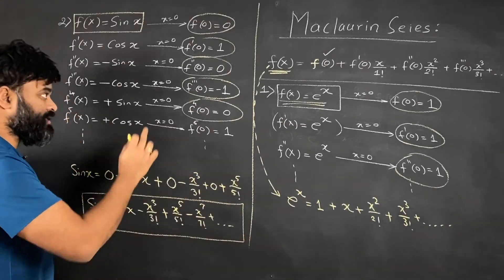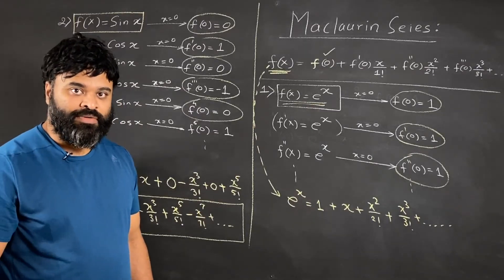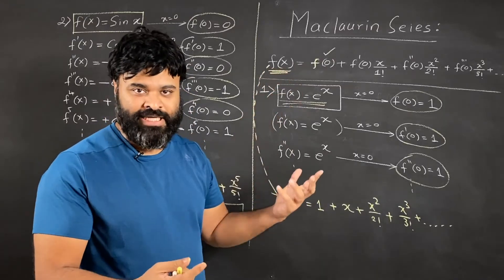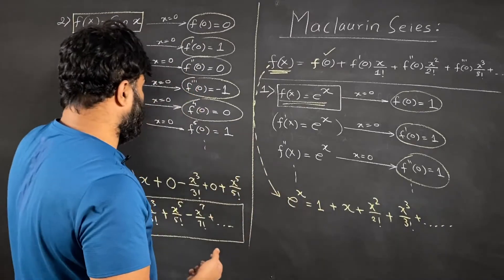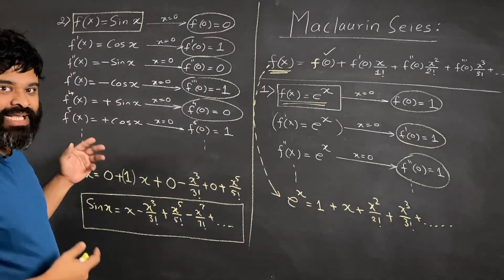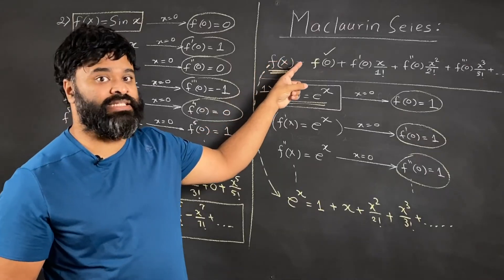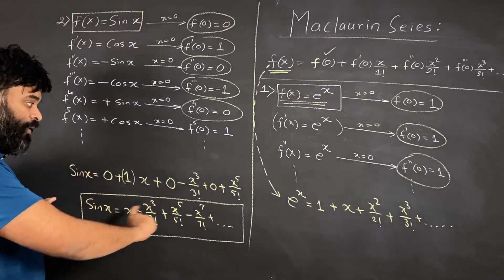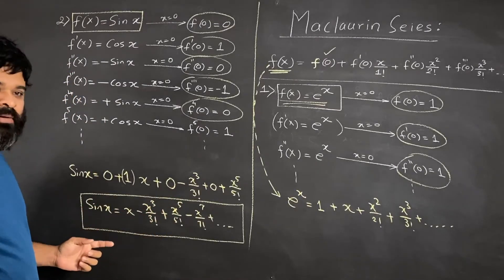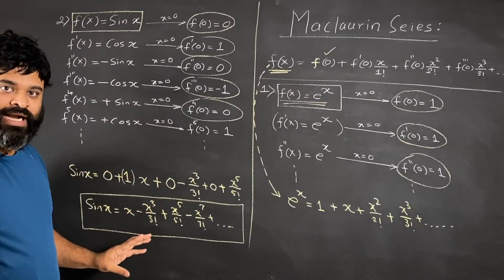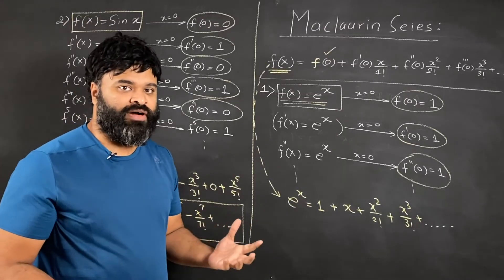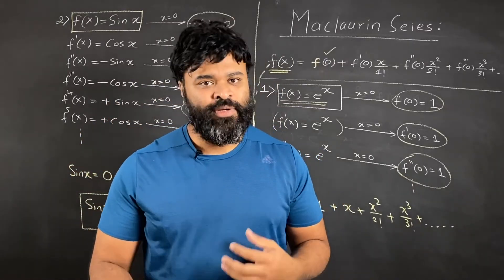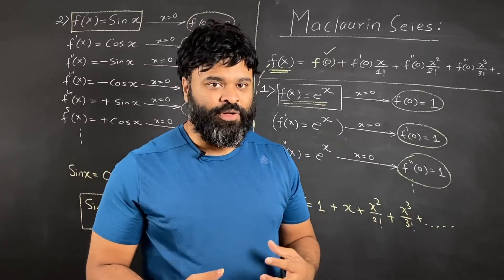These are still simple examples, but you can use any function f of x provided it is differentiable — all derivatives must exist. That is the precondition for Maclaurin series. If that holds, you can find a power series, and we call it a power series because you see the powers of x. This is the basic working of Maclaurin series — a very useful concept that we can use to solve limits and represent functions in just terms of x.